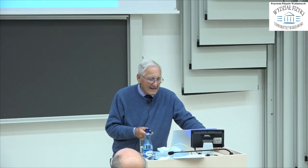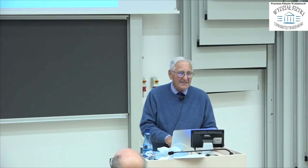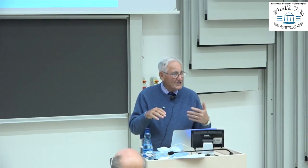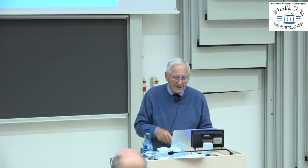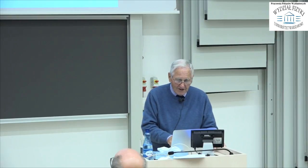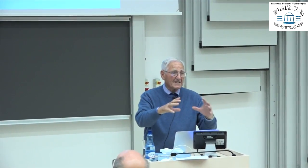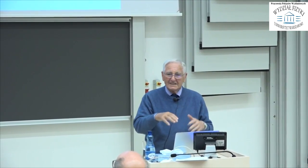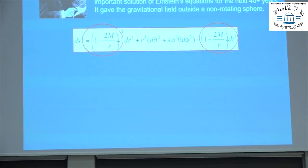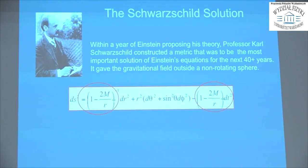The equations were pretty ghastly, so Einstein didn't think they would be solved because they were so nonlinear. But Carl Schwarzschild very quickly found the solution for a spherically symmetric body — just a ball sitting there, not rotating, nothing else in the universe. This corresponds to the inverse square law of Newton, except with modifications because it was Einstein's theory.